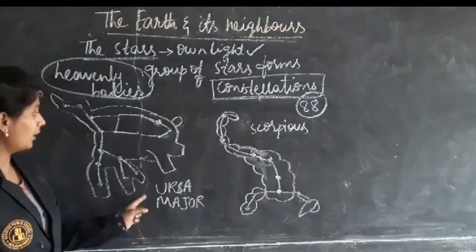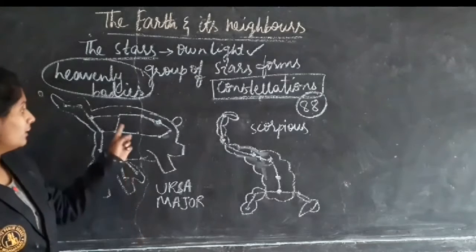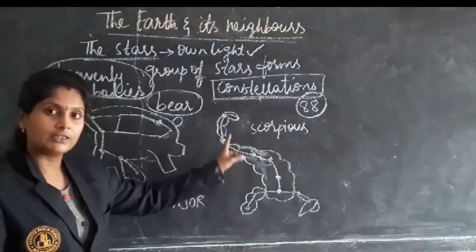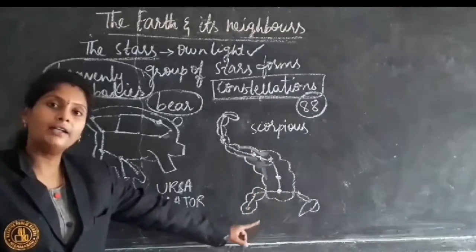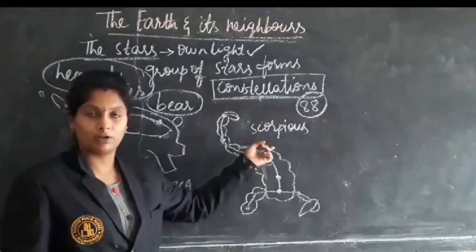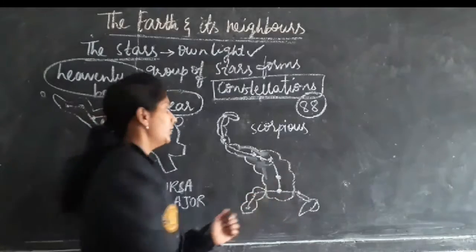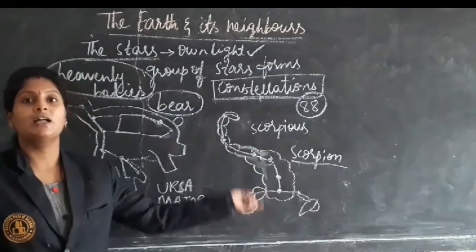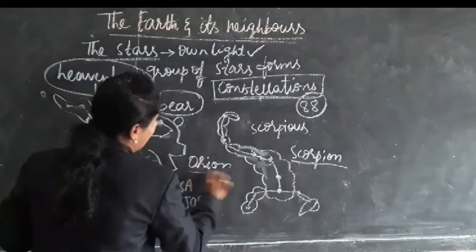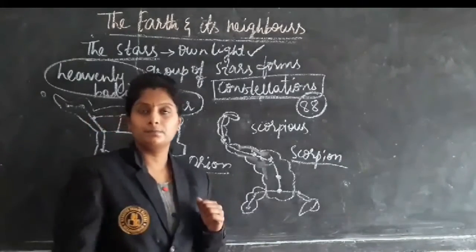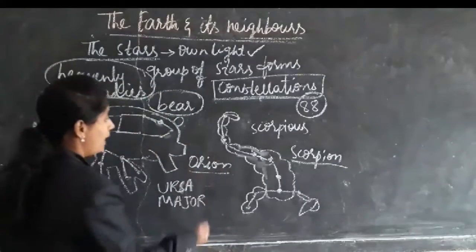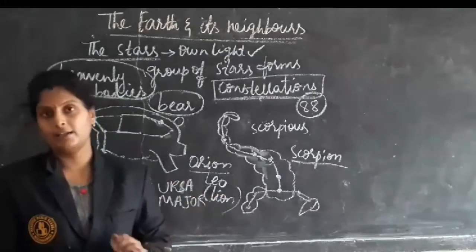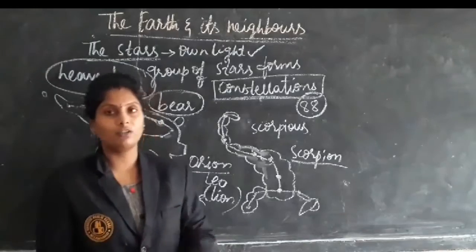For example, Ursa Major is one constellation we can see in the sky — it appears like a bear. Scorpius is a group of stars forming a pattern that appears like a scorpion. Orion appears like a hunter riding on a horse going for hunting. Leo takes the shape of a lion. In this way we can see different types of constellations in the sky.